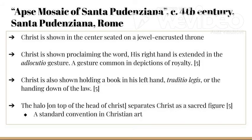Christ is shown in the center, seated on a jewel-encrusted throne. Christ wears a gold toga with purple trimming, both colors associated with authority. Christ is shown proclaiming the word; his right hand is extended in the adlocutio gesture, a gesture common in depictions of royalty. Christ is also shown holding a book in his left hand — tradutio legis, or the handing down of the law. Christ is depicted in this piece as a leader, there to hand down the law, as a strong authoritarian leader.